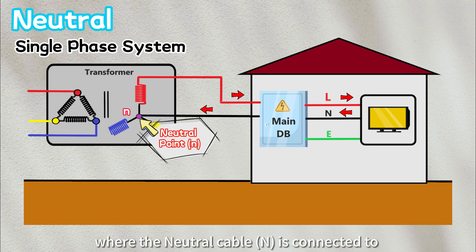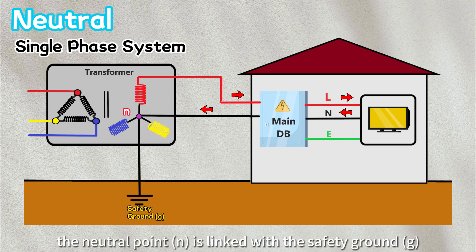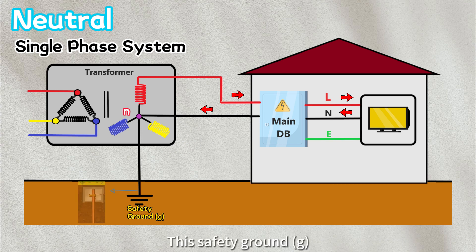Well, the reason lies in the transformer, where the neutral cable is connected to the neutral point of the transformer. Subsequently, the neutral point is linked with the safety ground. This safety ground often involves a substantial copper rod securely grounded in the earth.